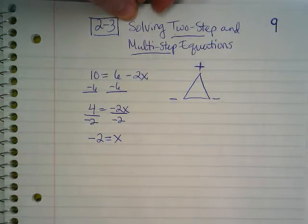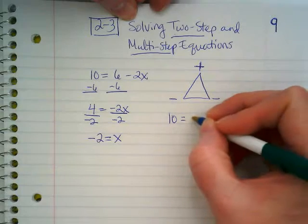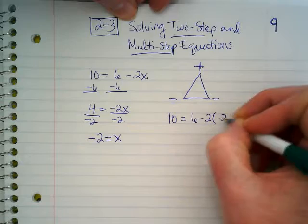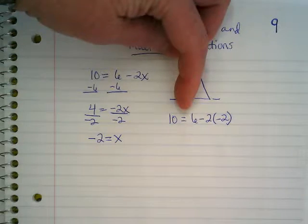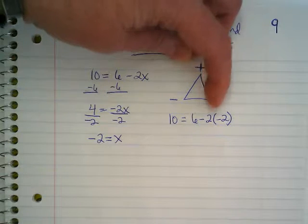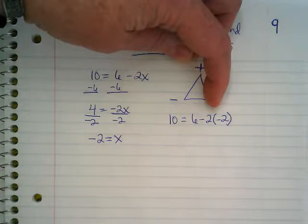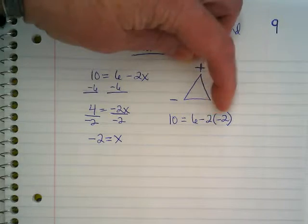I can go back and check. 10 is equal to 6 minus 2 times negative 2. Order of operations says that I have to do what first? Parentheses. But this parenthesis is just there to show that it's multiplication, right? So what's negative 2 times negative 2?